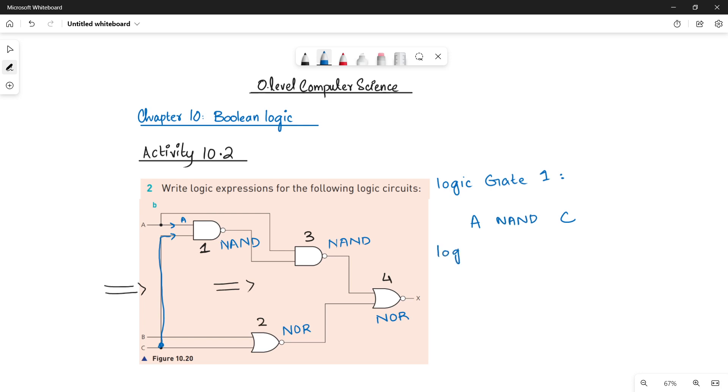Now quickly find out the function of logic gate two. For logic gate two, it is a NOR between B and C. So write down B NOR C. So we are done with one and two.